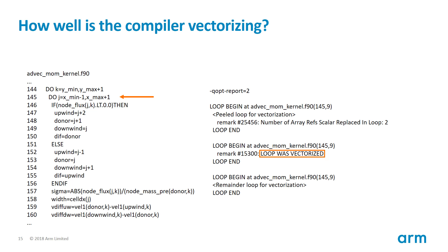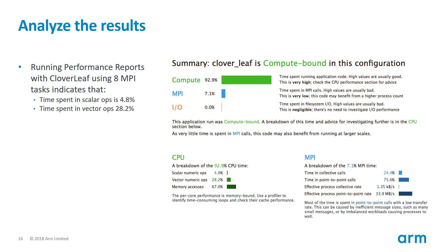Please note that as this loop is one of many, it is possible that further vectorization has been performed elsewhere, so let's run the code again with Performance Reports. Here is a report corresponding to our second run of CloverLeaf using the same runtime conditions but built with the Intel compiler rather than the GNU compiler. You can see that around 28% of the computation time is spent in vector instructions. This result is better than before, when the computation time spent in vector instructions was around 19% and the time spent in scalar instructions was around 15%.